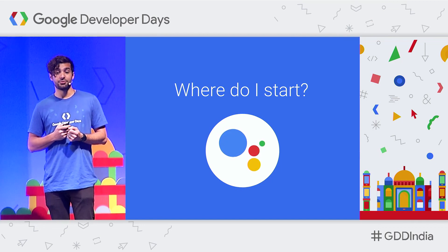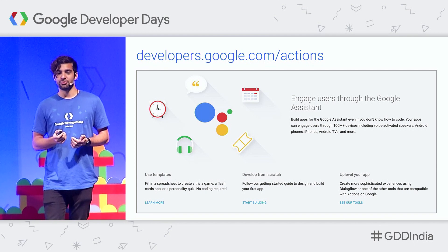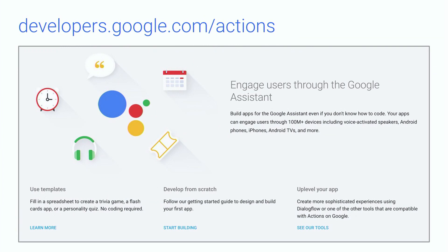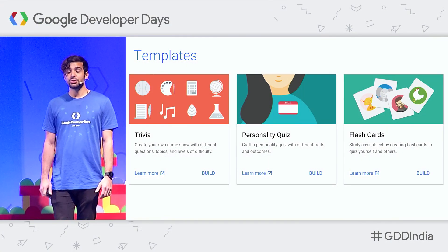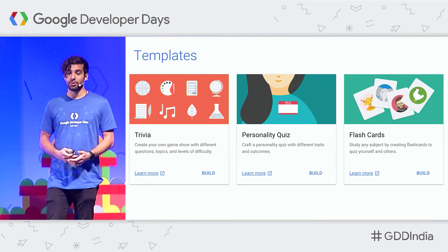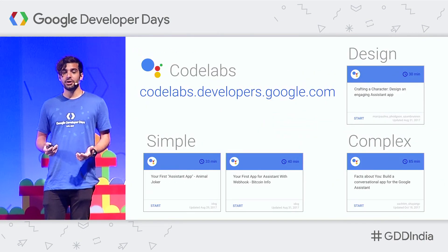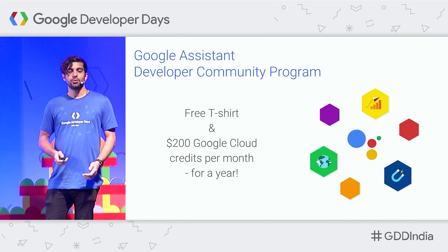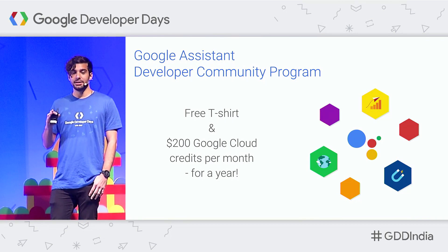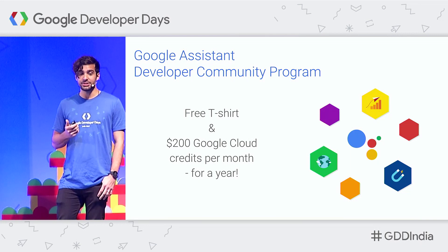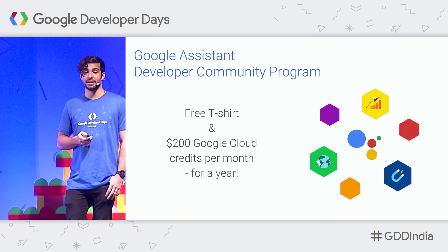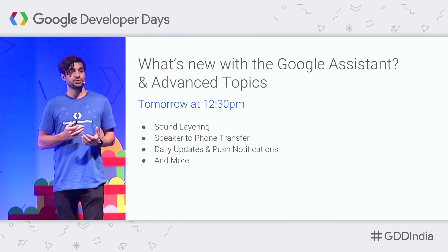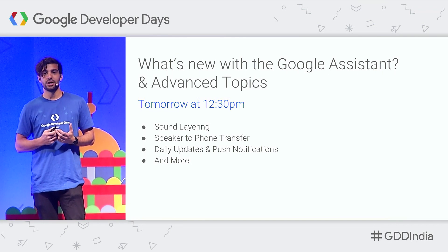Hopefully you're feeling excited about building your first app for the Google Assistant. Your first port of call should be the Google Developers page for Actions on Google — you'll find guides to getting started with building your first app. With templates, you can actually build an app without writing any code: just fill out a spreadsheet with questions and answers, and you can create your own trivia, personality quiz, or flashcards game. And on our Codelab site, we provide a variety of tutorials that will guide you through creating your first app for the Google Assistant using Dialogflow. We're also offering incentives through our developer community program — when you create and deploy your first app for the Google Assistant, we'll thank you with a free T-shirt, plus $200 of Google Cloud credits every month for a year. If you'd like to dive deeper into the platform, there's a talk tomorrow on new features and advanced topics — it'll show you how to do things like layering audio and sending push notifications to your users.